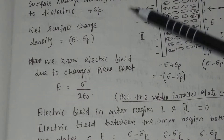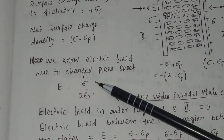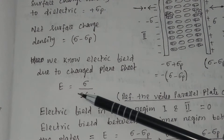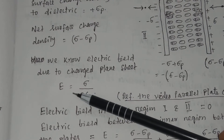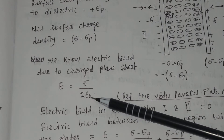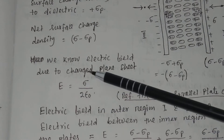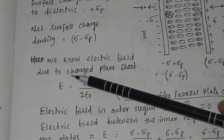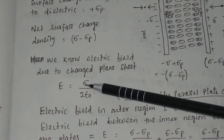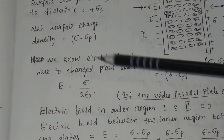We know the electric field due to an infinitely long charged plane sheet is E equal to sigma divided by twice epsilon 0. We have proved this — it is nothing but an application of Gauss law, as shown in a separate video on the application of Gauss law.